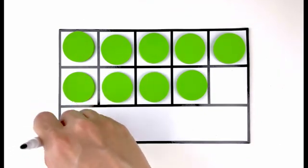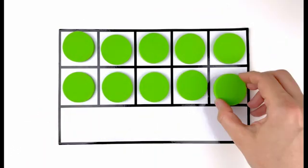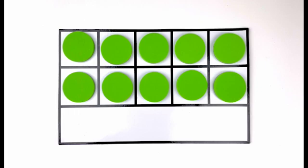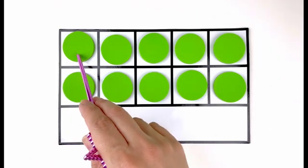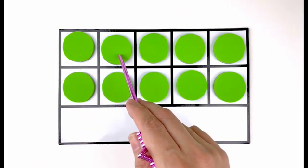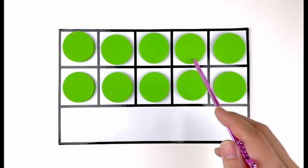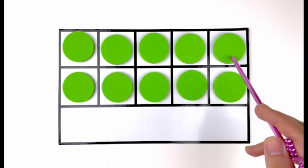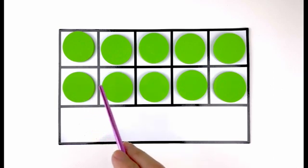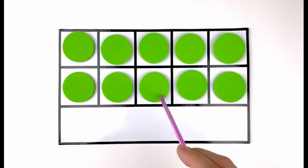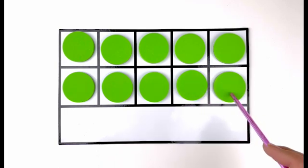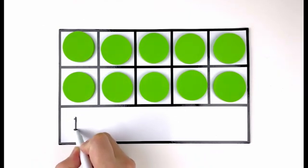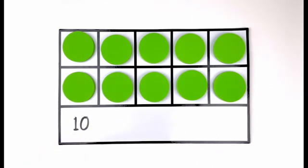All right. Let's add one more. How many green circles do you see this time? Let's count them. One, two, three, four, five, six, seven, eight, nine, ten. Ten green circles. Number ten is number one and zero in front of it. Ten green circles. Great job.